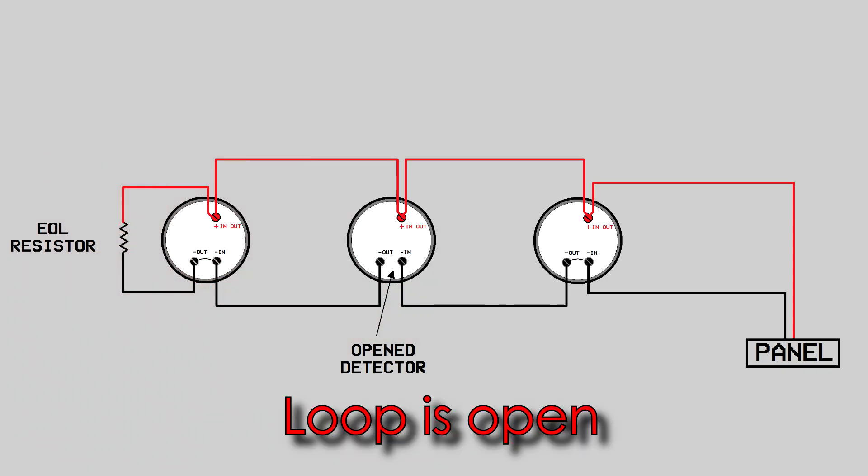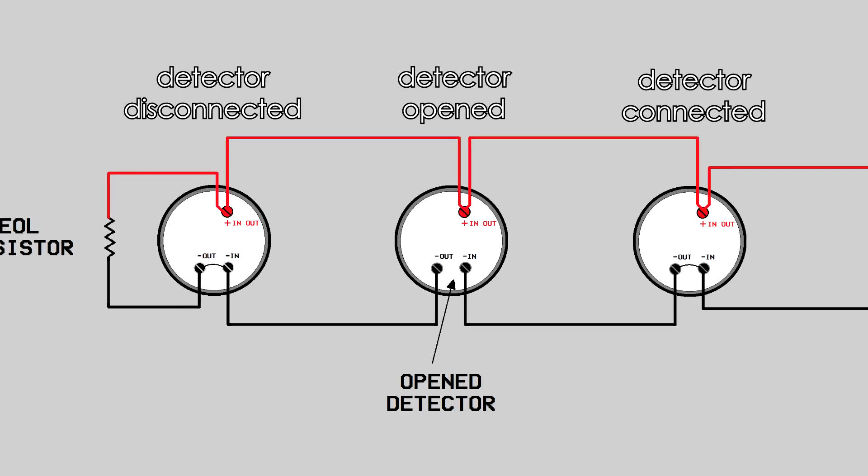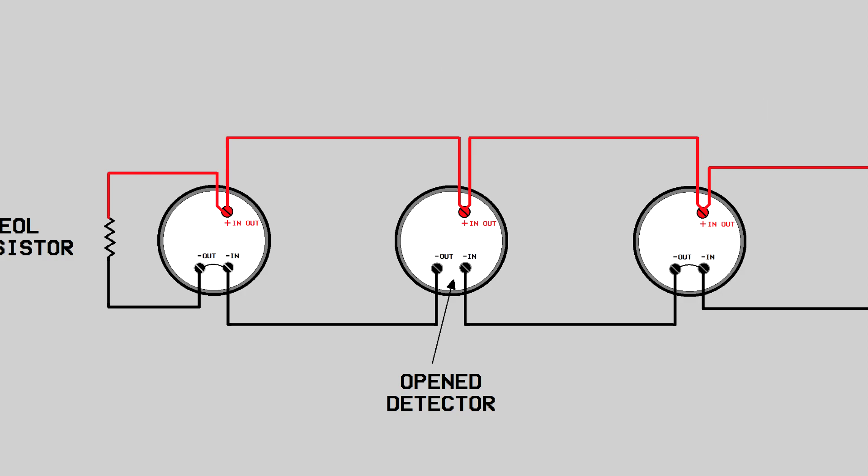The minute any detector is opened, the circuit path of the EOL resistor is opened. Therefore, the panel detects that some detectors in the line may not be actually connected with the system. The negative in and negative out terminals are shorted together inside the smoke detector unit. So whenever the detector is opened, the EOL path is opened and the panel gets to know about it.